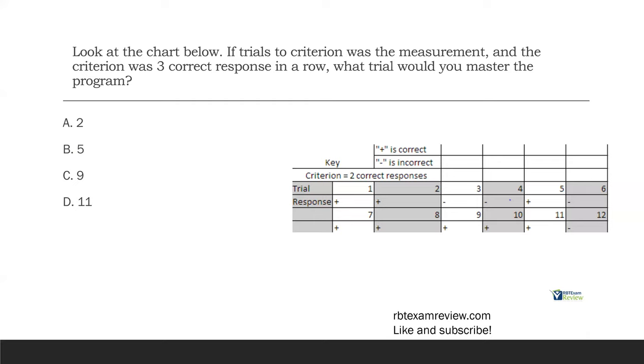Whatever that mastery criterion is, the client has to hit it before we master it out. Typically, you might see it written as must perform behavior three times in a row, sometimes must perform behavior three sessions in a row, whatever it would be. Trials to criterion says, how many trials did it take to reach that goal?